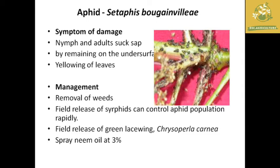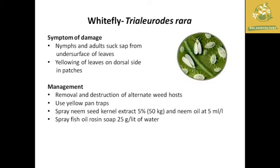The next pest is aphids, with scientific name Cerataphis sp. Nymphs and adults suck sap from the undersurface of leaves, causing yellowing of leaves. Management includes removal of weeds, field release of syrphids which rapidly control aphid populations, release of green lacewings Chrysoperla carnea, and spraying of neem oil at 3%.